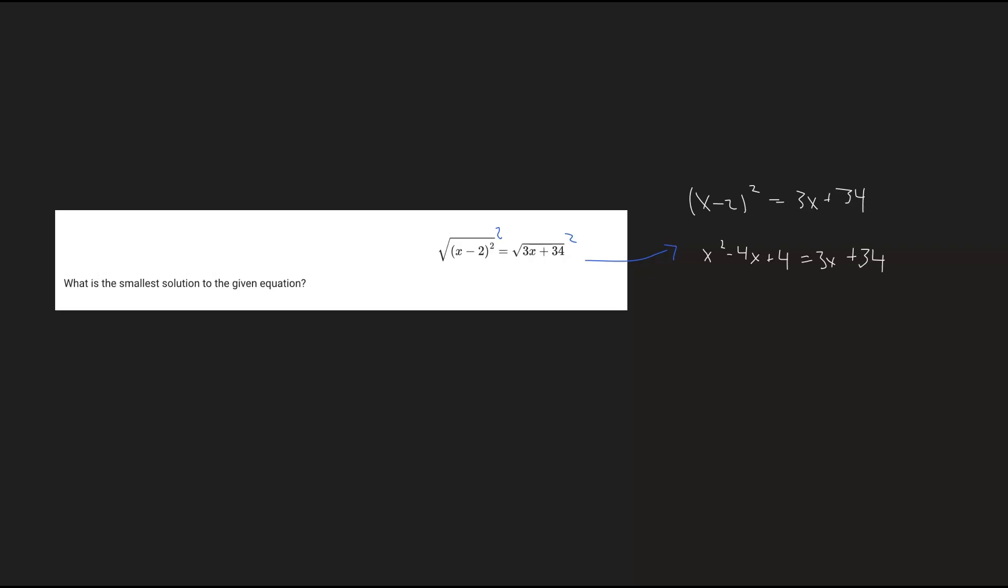Now we just want to get everything on one side, because then it's going to become a quadratic equation which we can factor and solve for the zeros. So if we subtract 3x and subtract 34, we'll get the following.